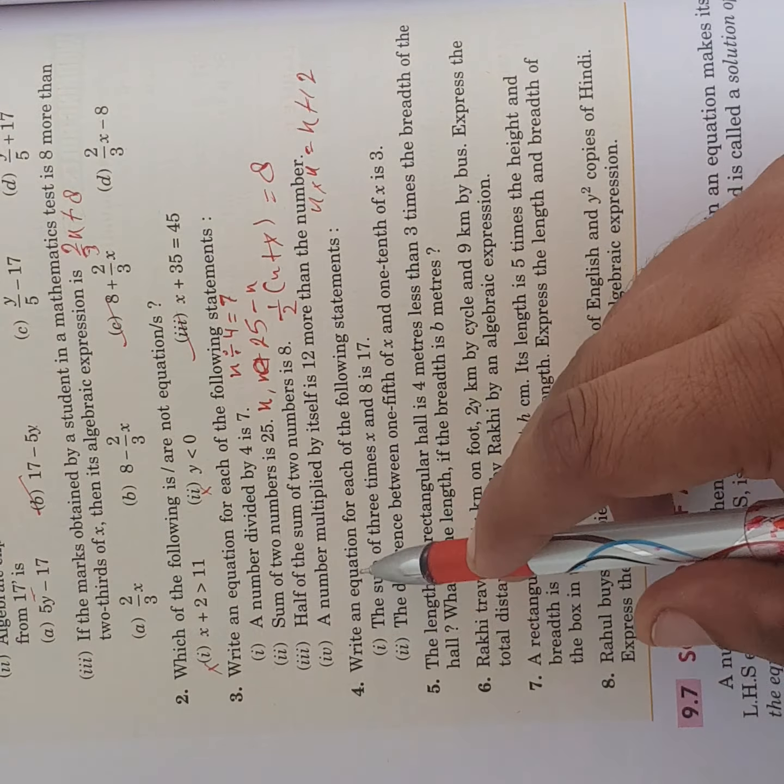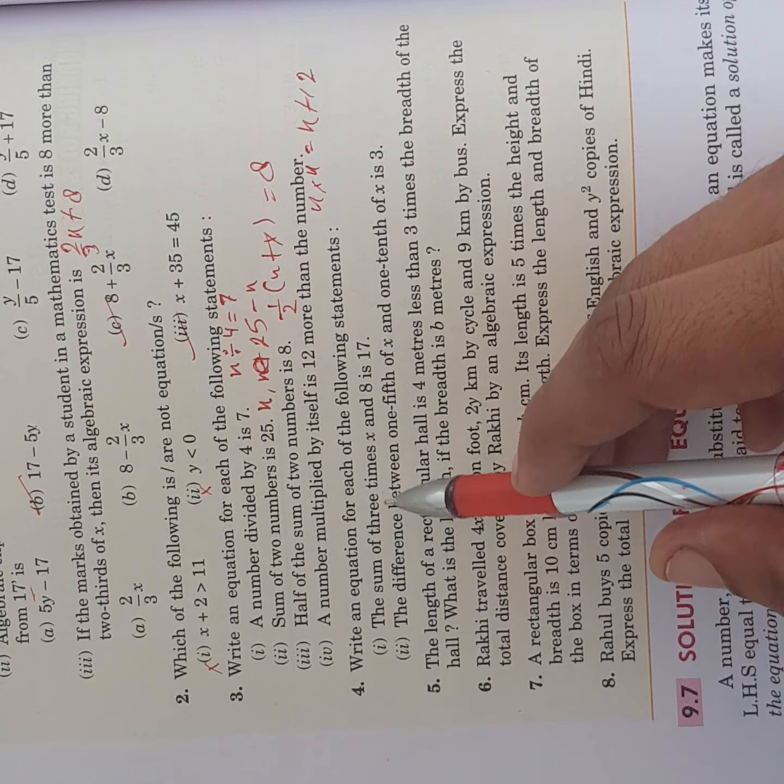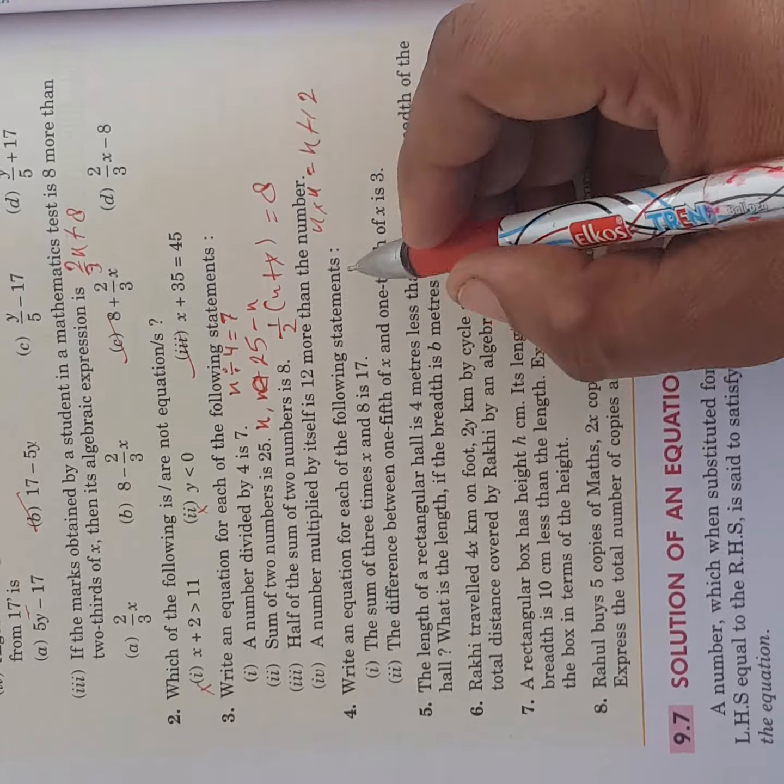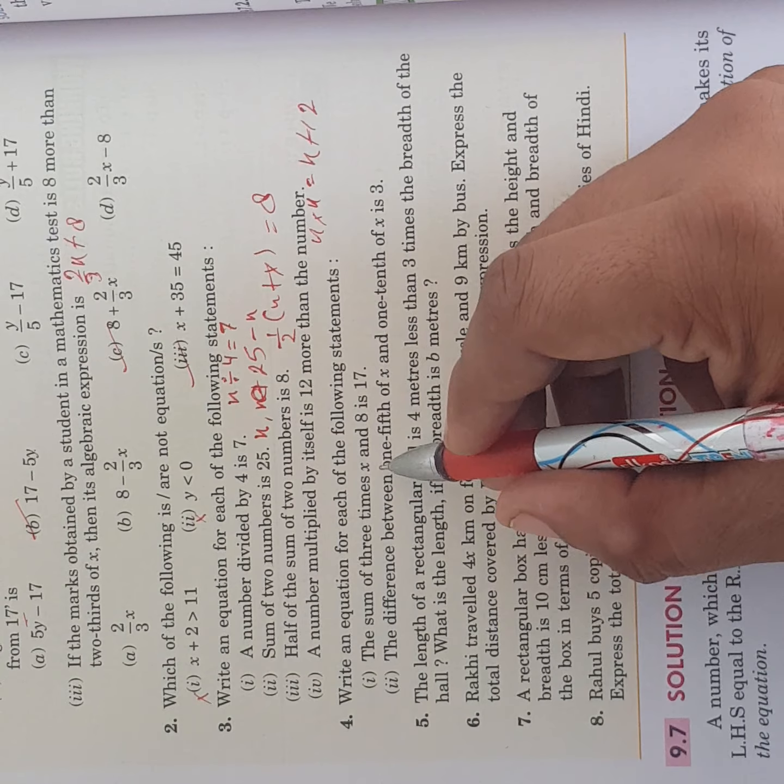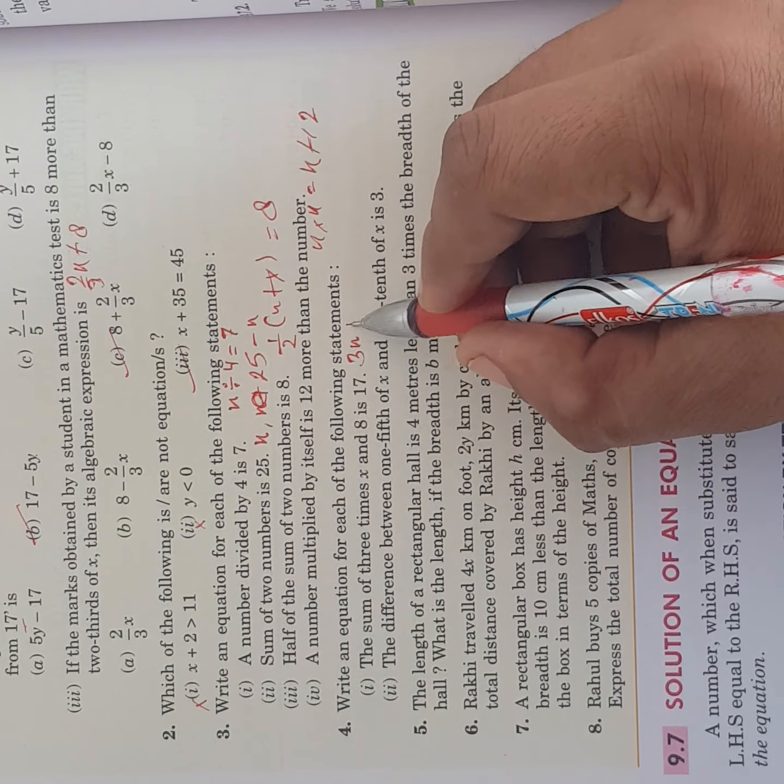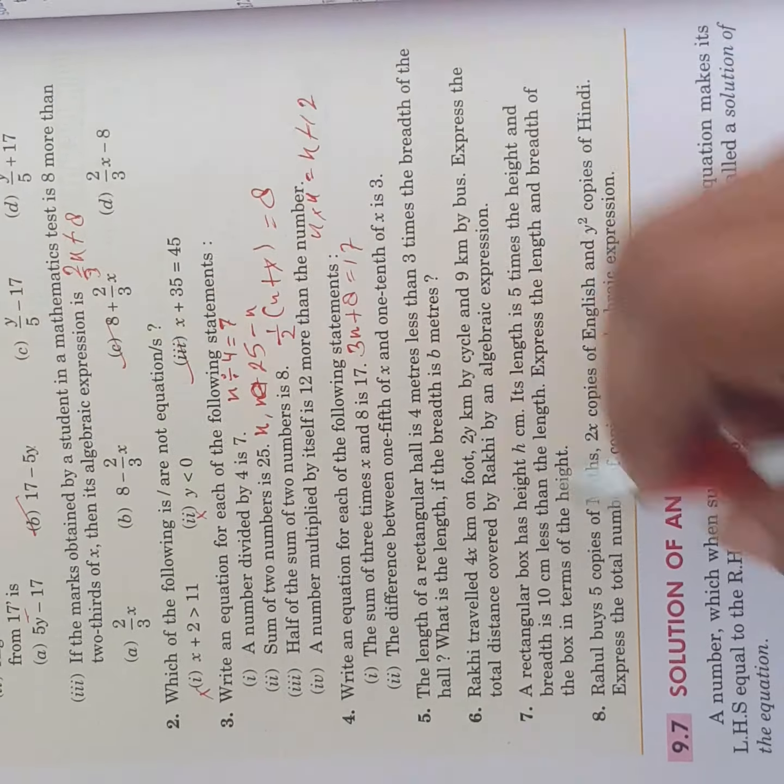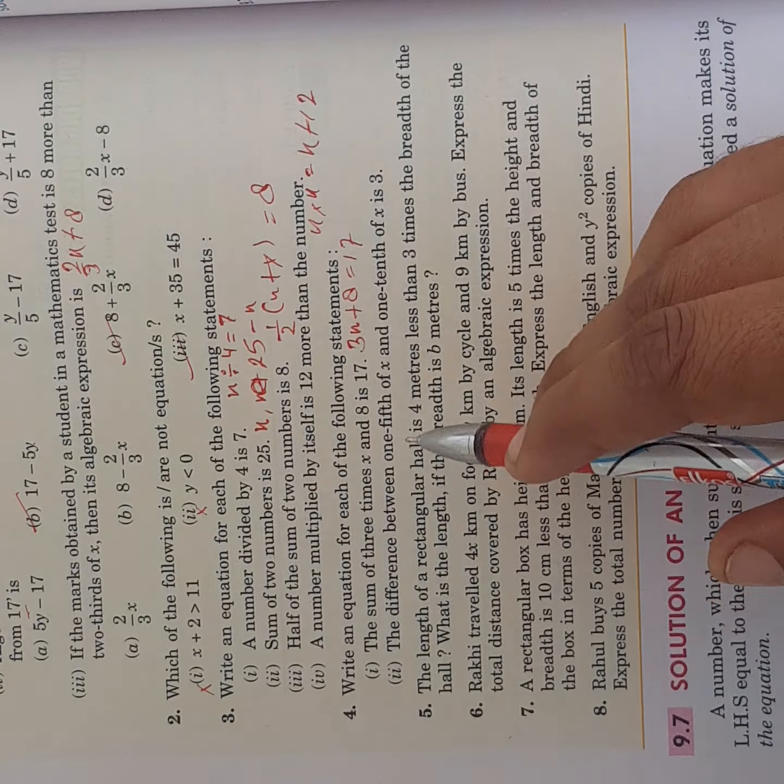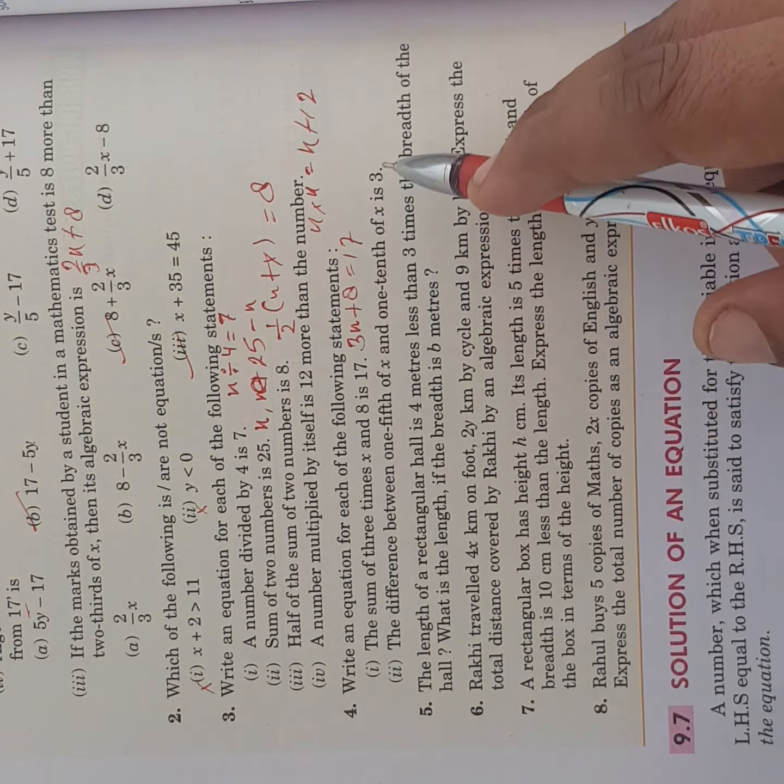Let's treat to the 4th question. Write an equation for each of the following statement. Sum of 3 times x and 8 is 17. Sum of 3 times x means 3x and 8 is 17, it means equal to 17.